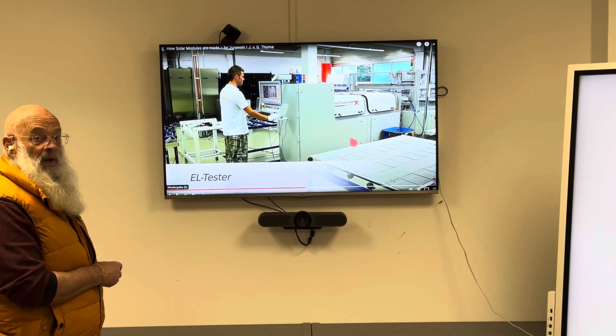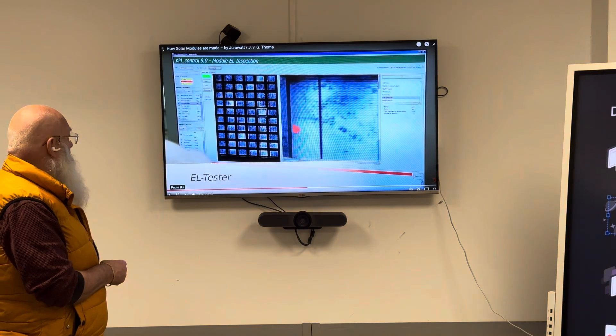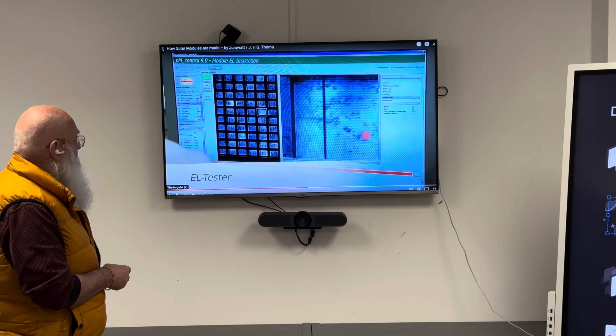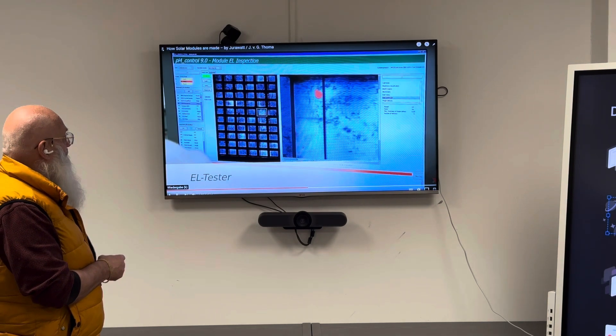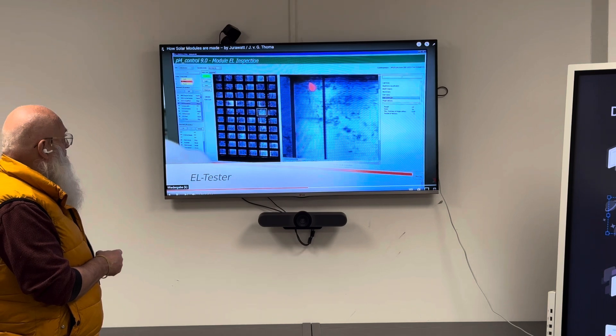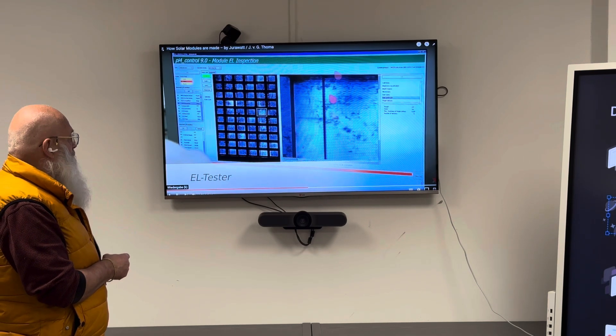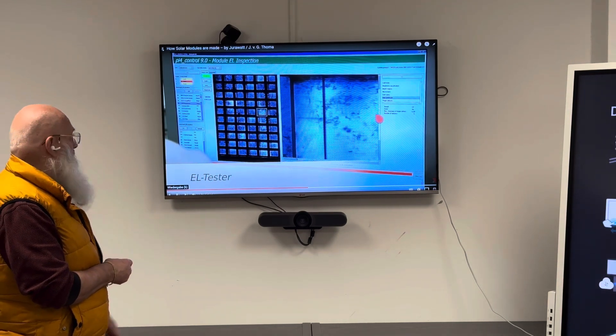This is an EL tester I already explained. This is a picture, this is not a failure, this is normal at solar cells. But you can see if there are micro cracks, if there are cut tiny parts of the solar cell, maybe this can be a failure. If there are too many failures we sort it out and we mark it as B or C class.